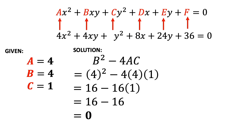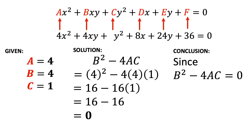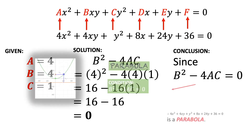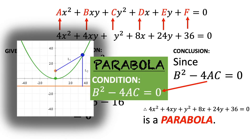Moving to the last procedure, since the computed value of the discriminant is exactly 0, therefore the conic section being described by the given general equation is a parabola.